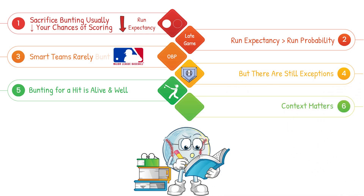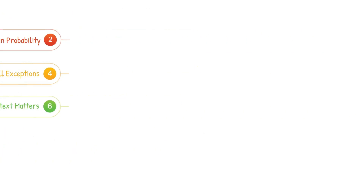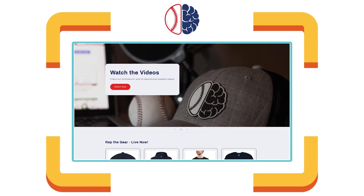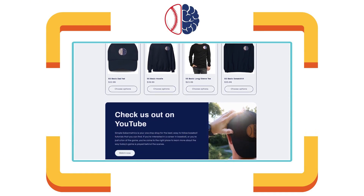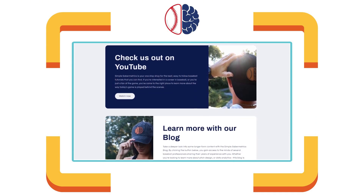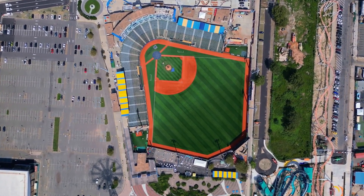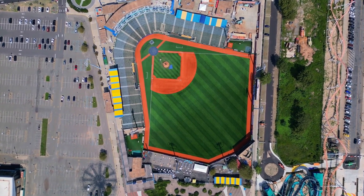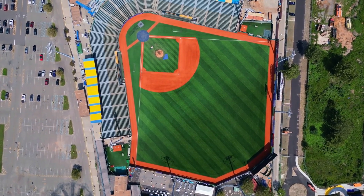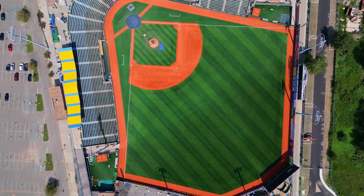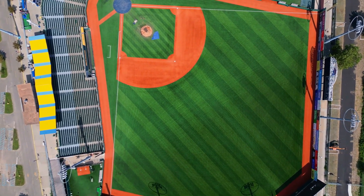Context matters. In youth, college, or small ball environments, bunting can still be effective — but even there, it should be situational, not automatic. If you'd like to support Simple Saber Metrics, check out our merch on our website or in the store tab on the channel. Every purchase helps us bring you more deep dives into baseball stats and strategy. Check out our other videos on leverage index, batting order optimization, and predictive analytics in baseball. Thank you for watching — see you next week on Simple Saber Metrics.